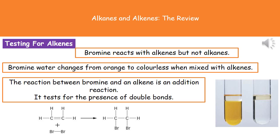What happens is that the double bond gets broken, and those carbons each join on to a bromine atom. The bromine becomes incorporated into the compound, which means it no longer has that distinctive orange colour — it goes colourless instead. So it's a simple test: add bromine water, if it goes from orange to colourless we've got an alkene; if it stays orange, we've got an alkane.